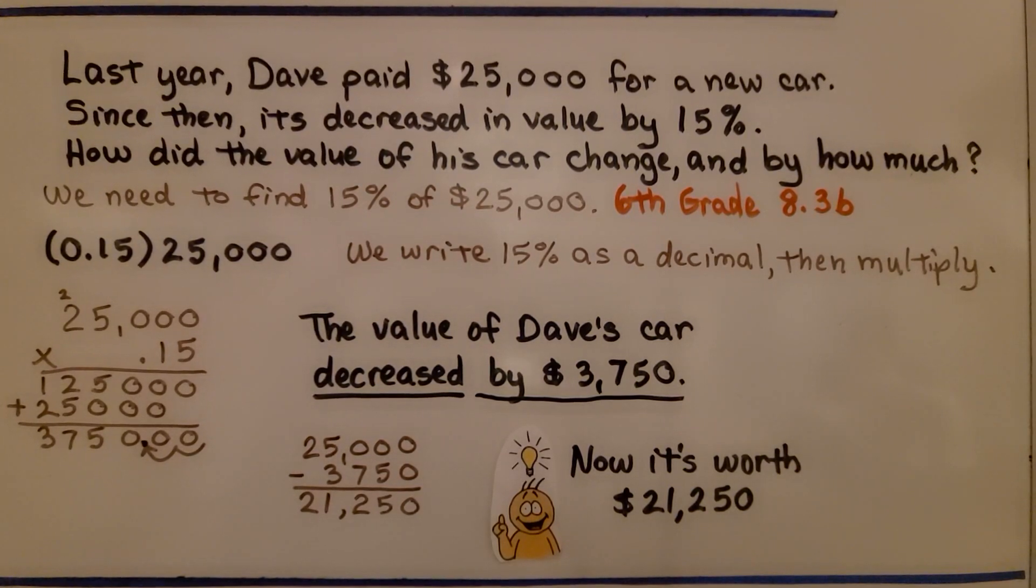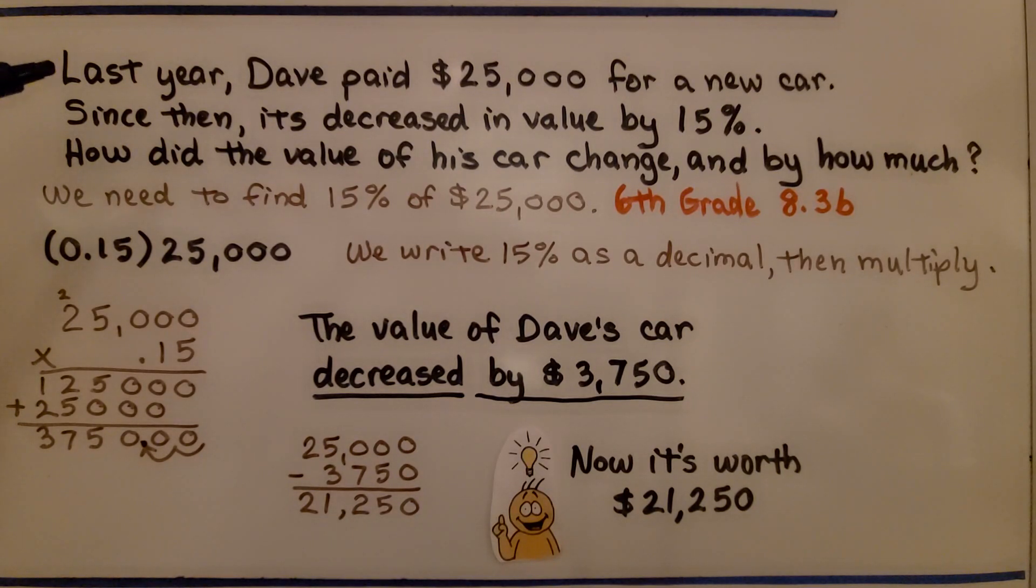Do you remember from last year how to find the percent of a number? That's what we have to do in this one. It says, last year, Dave paid $25,000 for a new car. Since then, it's decreased in value by 15%. How did the value of his car change, and by how much? So, we need to find 15% of $25,000.